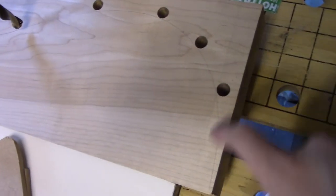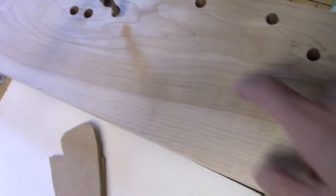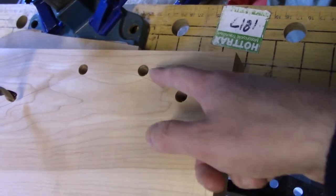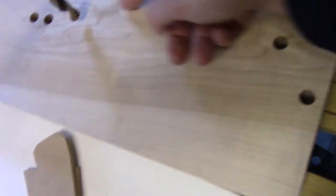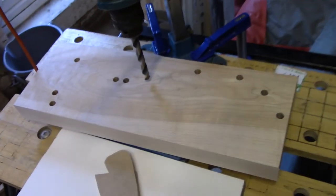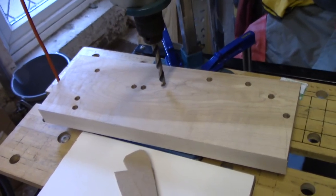So I've marked out the shape of the wings on the maple, and I'm now drilling holes at points where I can then use the jigsaw to do straight lines between them, because the jigsaw cuts reasonably well in a straight line but it really doesn't like doing curves.